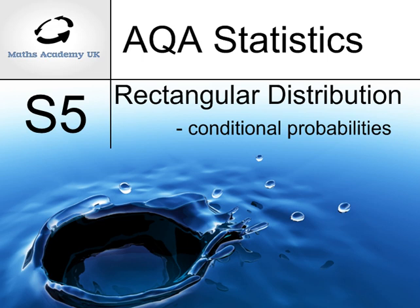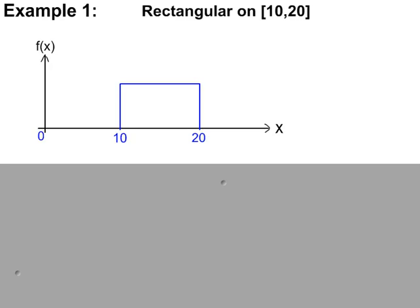The rectangular probability distribution and conditional probabilities. Example 1, sketching this rectangular distribution.